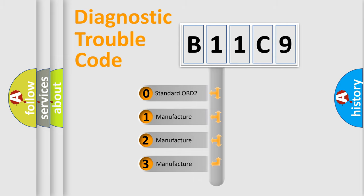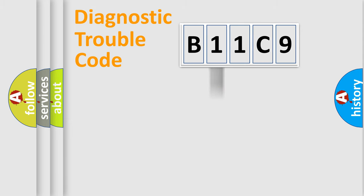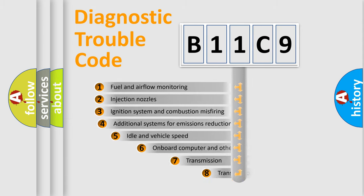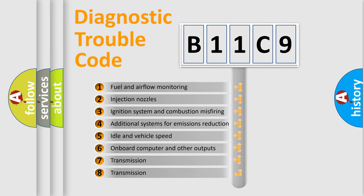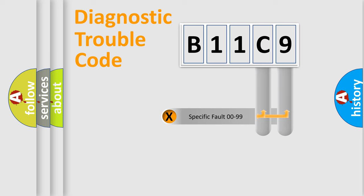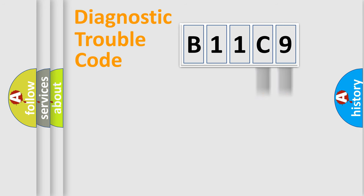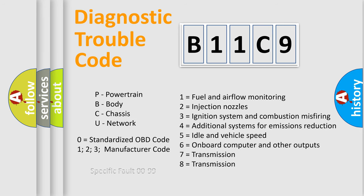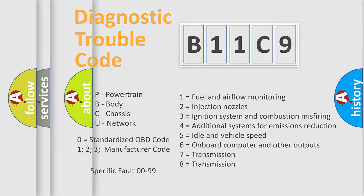If the second character is expressed as zero, it is a standardized error. In the case of numbers 1, 2, or 3, it is a more specific expression of a car-specific error. The third character specifies a subset of errors. This distribution is valid only for the standardized DTC code. Only the last two characters define the specific fault of the group, and such a division is valid only if the second character code is expressed by the number zero.